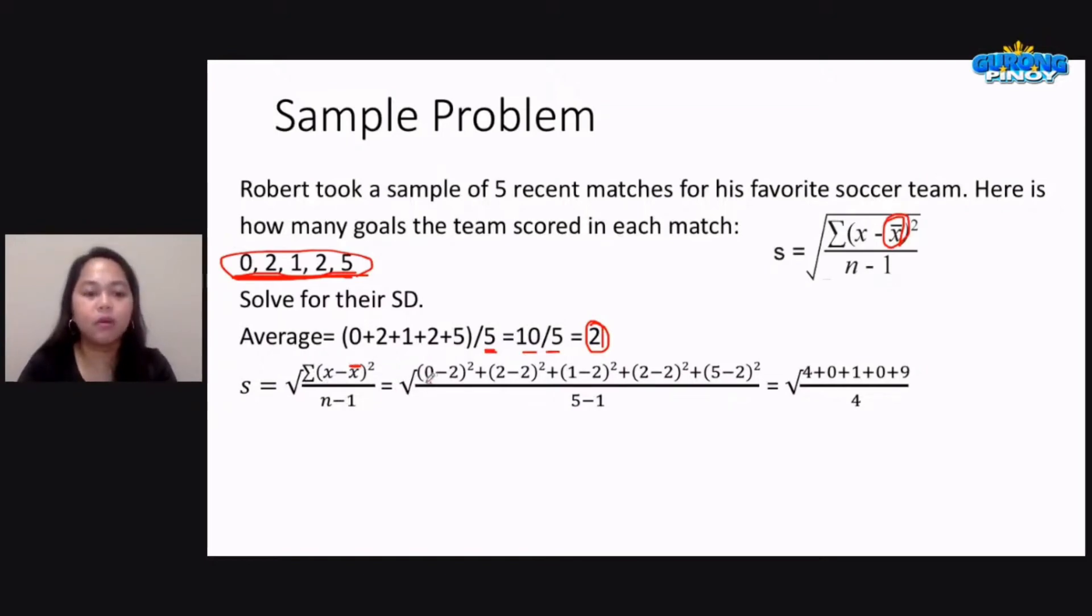So that means we have 0, that's the first score, minus 2. Yung 2 po is our average. So 0, the first score, minus 2 na average, the quantity is squared.